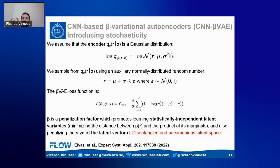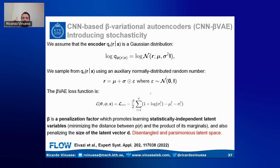The beta penalty promotes a disentangled and parsimonious latent space — statistically independent variables of minimum dimension. A large value of beta gives a disentangled latent space at the cost of worse reconstruction accuracy. The decoder takes us from latent to original space, and the encoder maps original to latent space, where we can observe the stochasticity — the latent space has a mean, standard deviation, and noise injected to sample from it.